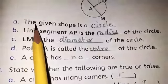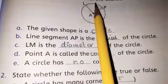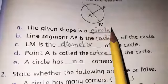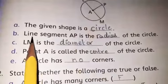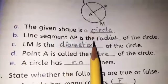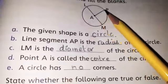A: The given shape is a dash. This shape is circle. B: Line segment AP is the dash of the circle. Line AP.